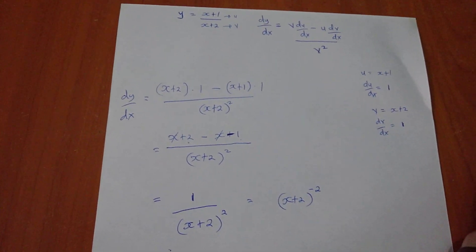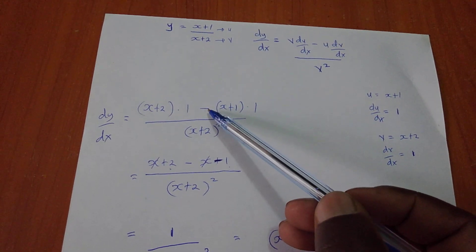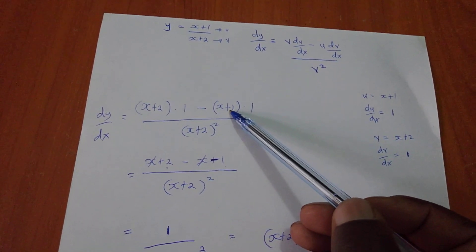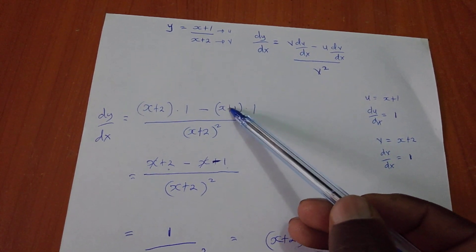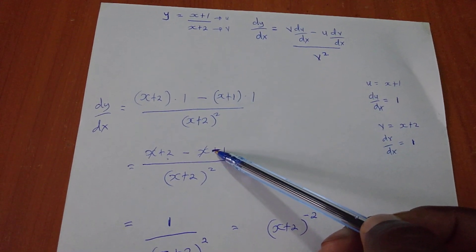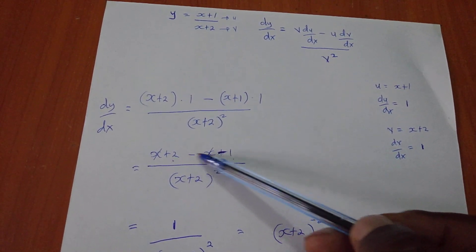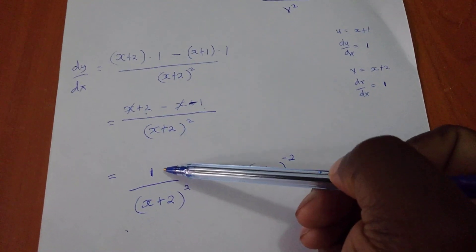Please don't get confused. From in here, if you look, this negative - if it enters in the bracket, it will change this positive to be a negative. That's why I have 2 minus 1, and I ended up with 1.